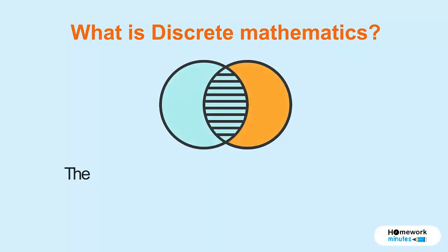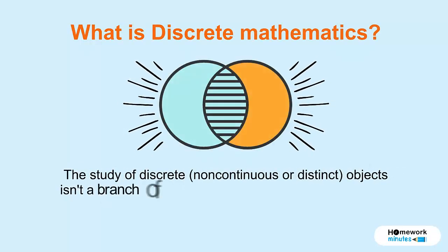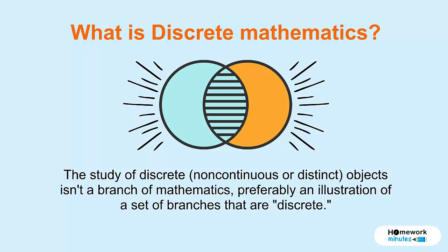What is discrete mathematics? The study of discrete, non-continuous or distinct objects is a branch of mathematics, preferably an illustration of a set of branches that are discrete.